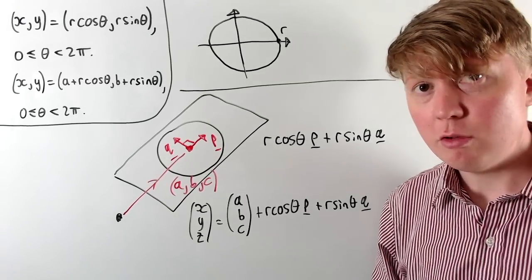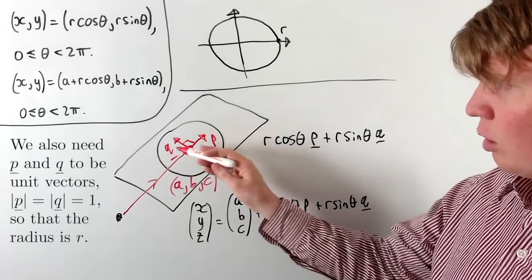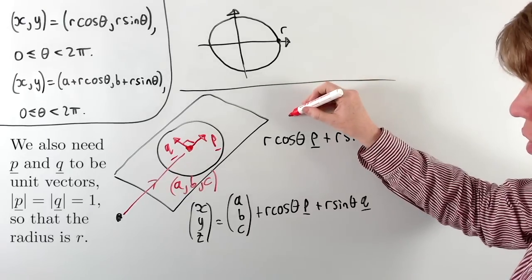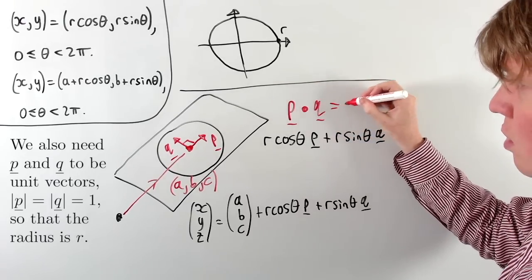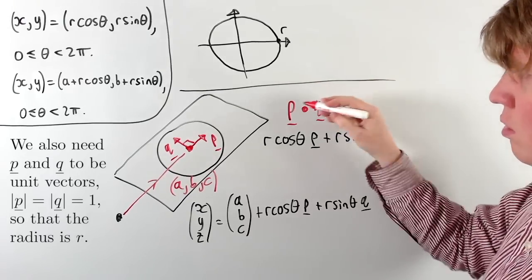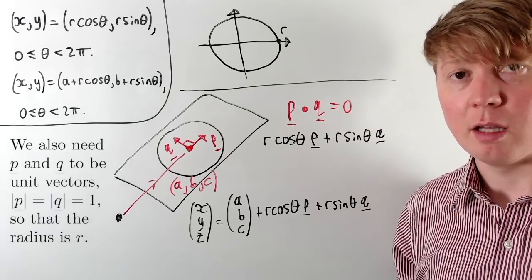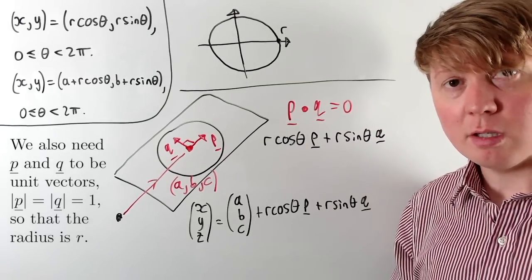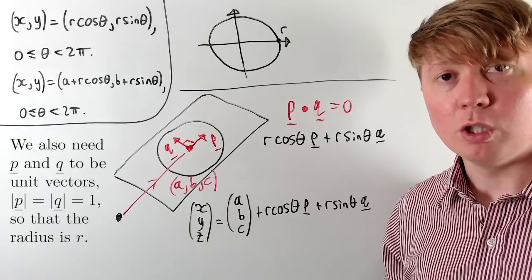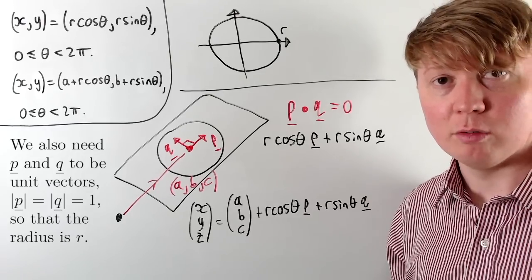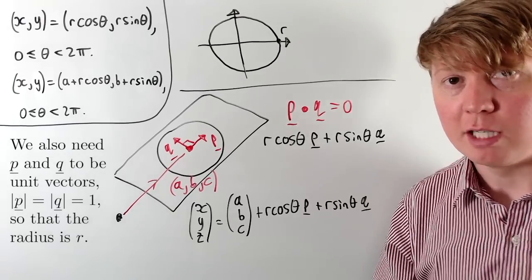This is a bit restrictive because we need P and Q to be perpendicular to each other — P · Q = 0 — and they need to be unit vectors so that multiplying by r gives us a circle of actual radius r. We'll see if there's a more natural way of doing this, and complement the general parametric form for a plane in 3D.